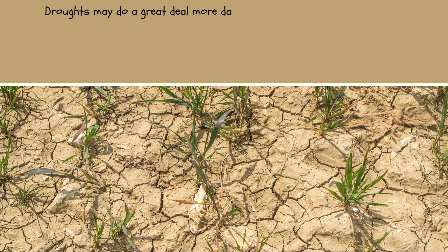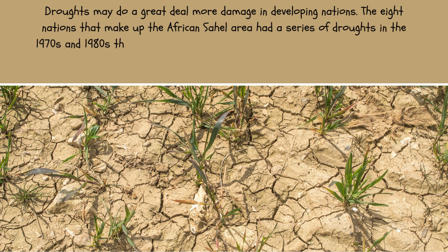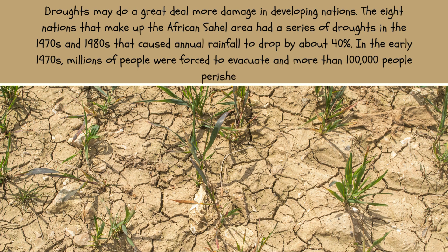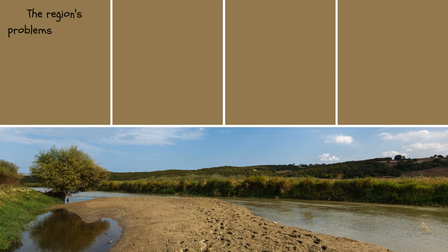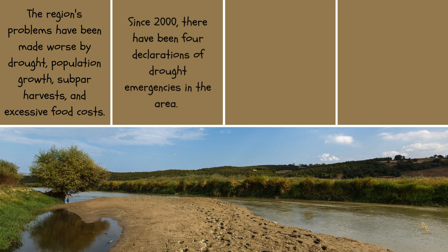Droughts may do a great deal more damage in developing nations. The eight nations that make up the African Sahel area had a series of droughts in the 1970s and 1980s that caused annual rainfall to drop by about 40%. In the early 1970s, millions of people were forced to evacuate and more than 100,000 people perished. The region's problems have been made worse by drought, population growth, subpar harvests, and excessive food costs. Since 2000, there have been four declarations of drought emergencies in the area.